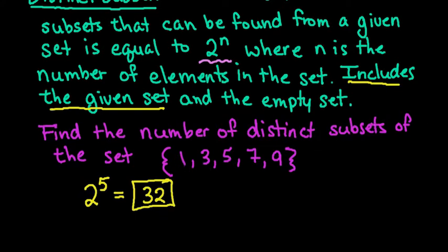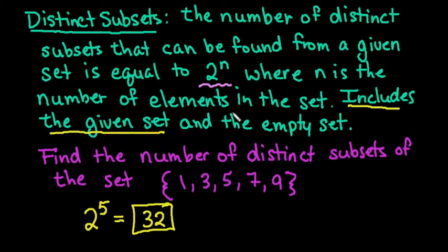Anytime you're asked how many distinct subsets can be formed from a given set, you just take 2 to the nth power.